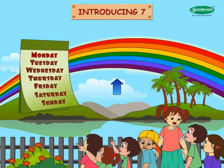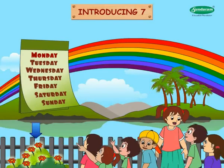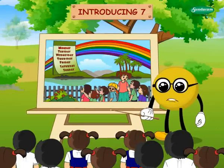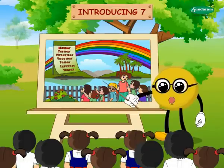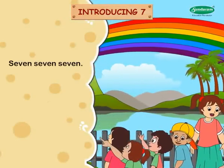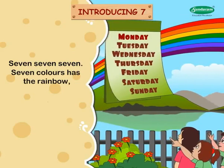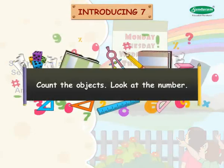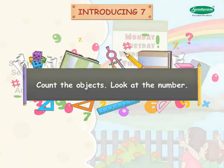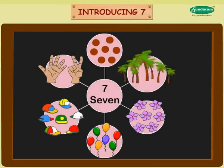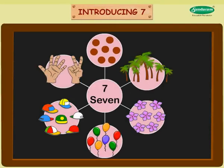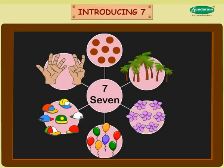Introducing seven. Seven days in the calendar. Seven colors in the rainbow. Seven children. Seven coconut trees. And seven flowers. Excellent! Let us now sing a number jingle for seven. Seven seven seven — seven colors has the rainbow, and seven days the week too. Count the objects. Look at the number. Seven dots. Seven coconut trees. Seven flowers. Seven balloons. Seven caps. Seven fingers.